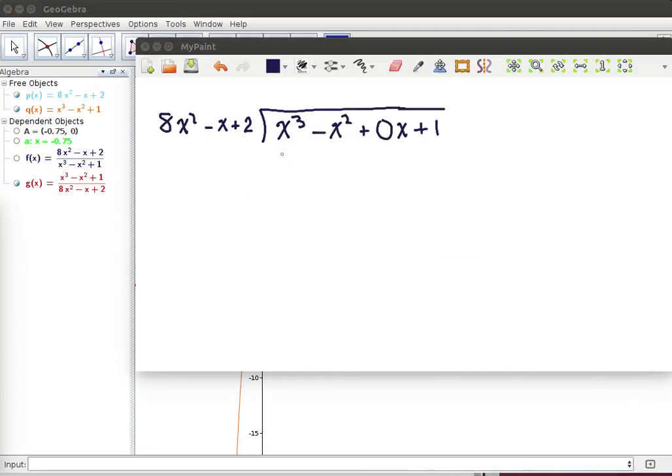So here we have set things up to do the long division. Notice that we put this placeholder of 0x in here just because it will be easier to keep track of things. Now 8x² - x + 2, I need to get something that will times 8x² and give me x³ exactly. That will be 1/8 times x.